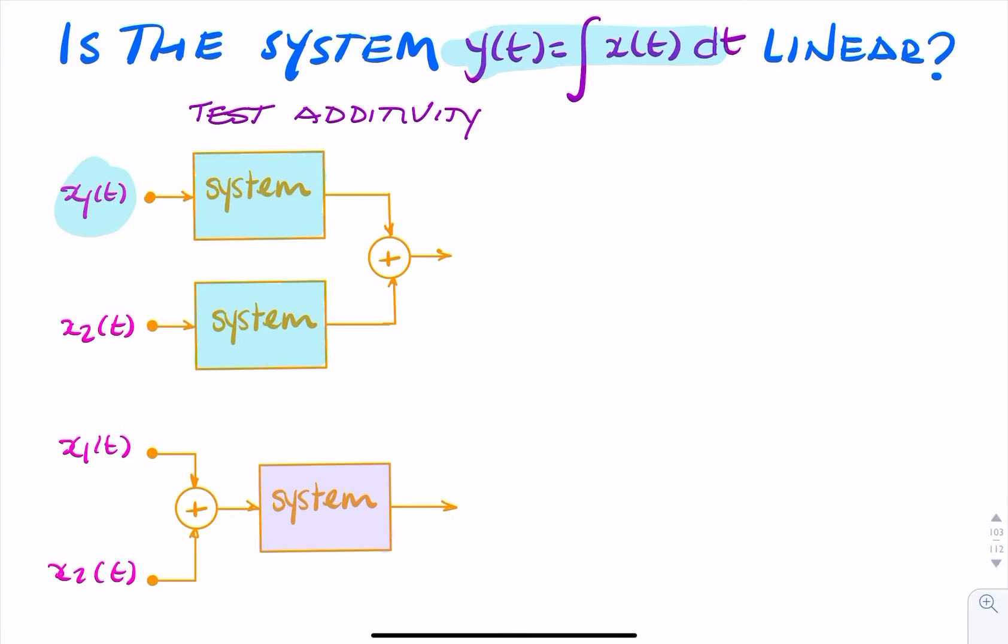What happens if we feed x1 of t into our system? What we should get is simply the integral of x1 of t dt. And if I feed x2 into the system, I should just get the integral of x2 of t dt. And if I add these two together, I should simply get integral of x1 of t dt plus the integral of x2 of t dt.